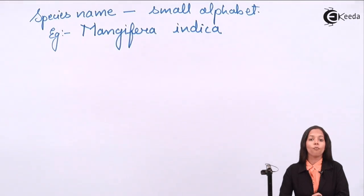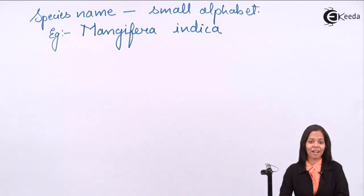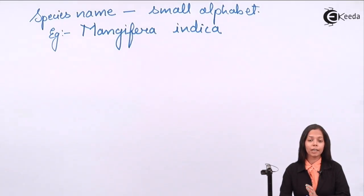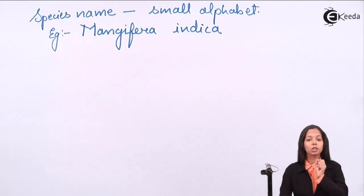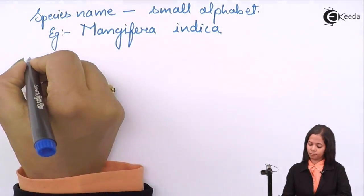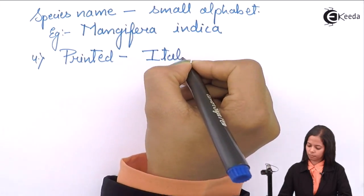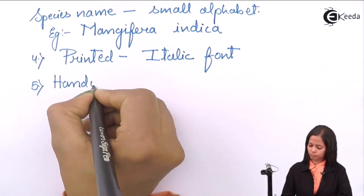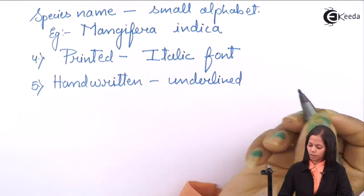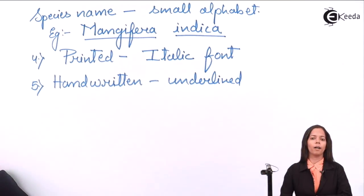Rule number four: whenever binomial names are written, they should be written in italic font. However, since everyone cannot write in italics, when it is handwritten it should be underlined. For example, Mangifera indica — the genus name and the species name should each be underlined separately.